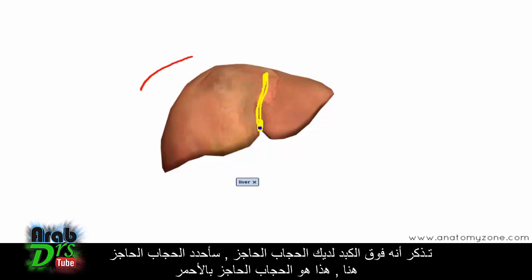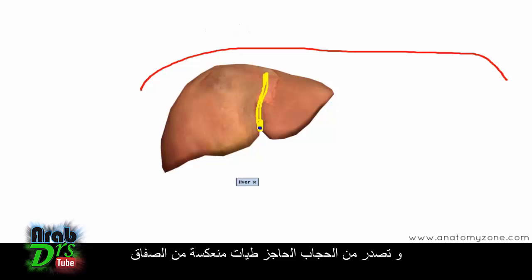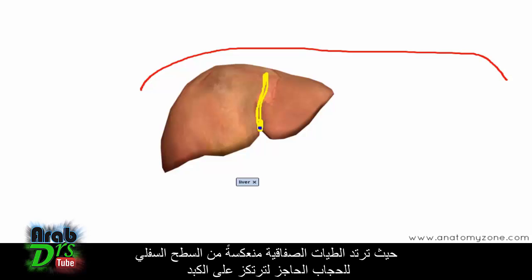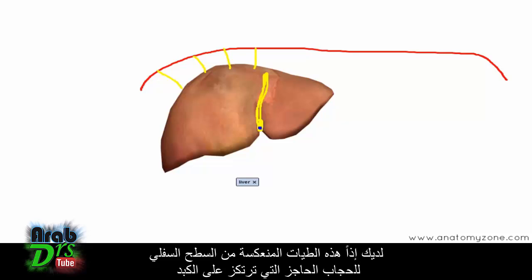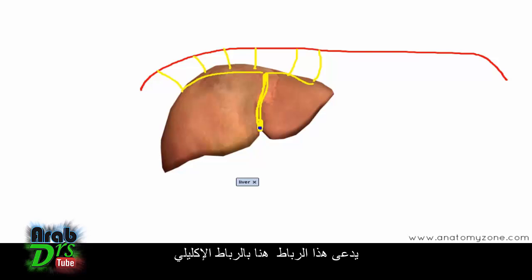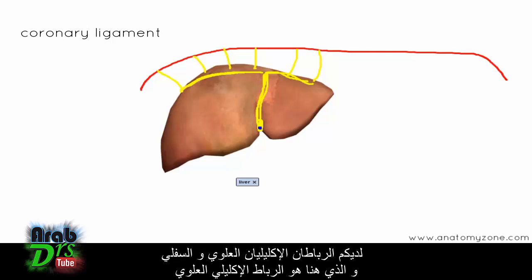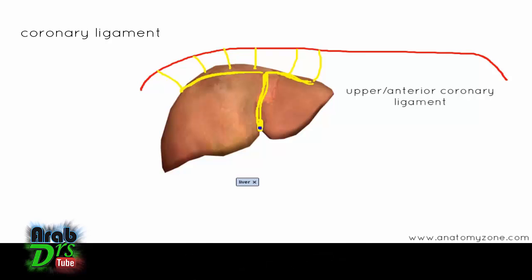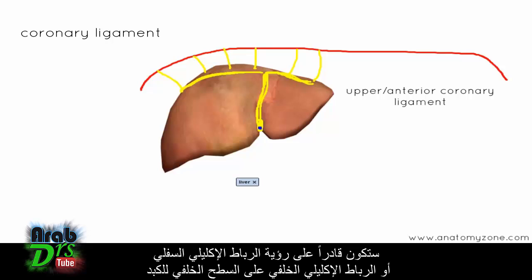Above the liver you've got the diaphragm — I'm drawing the diaphragm on here in red. Reflecting off the diaphragm, you've got folds of peritoneum. These folds reflect off the inferior surface of the diaphragm and attach onto the liver. This ligament here is called the coronary ligament, and you've got upper and lower coronary ligaments. This one here is the upper coronary ligament. The lower coronary ligament, or posterior coronary ligament, can be seen on the posterior surface of the liver.